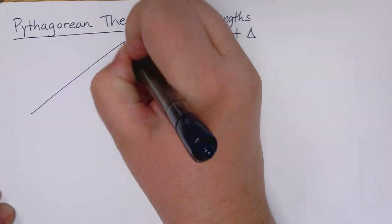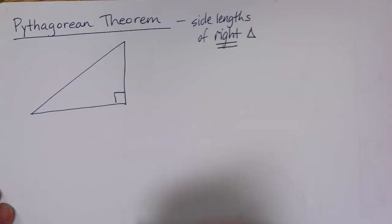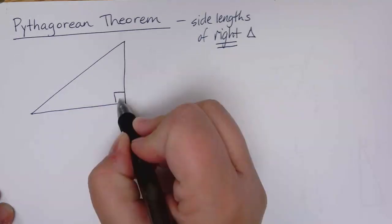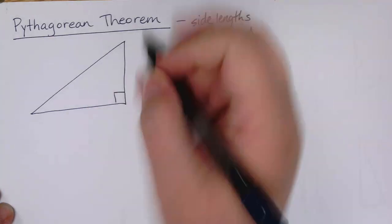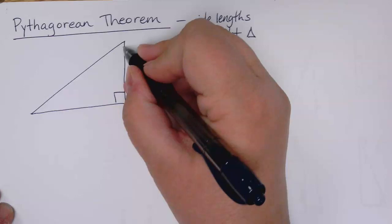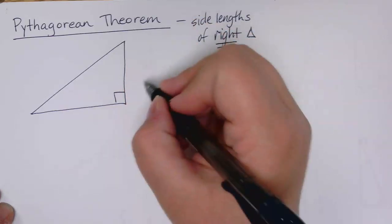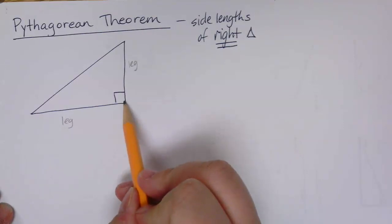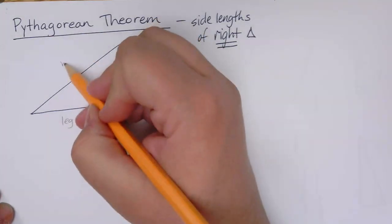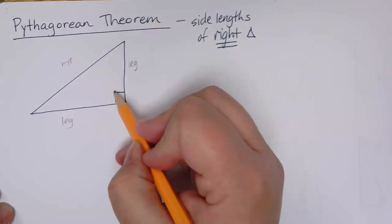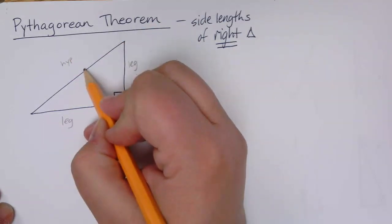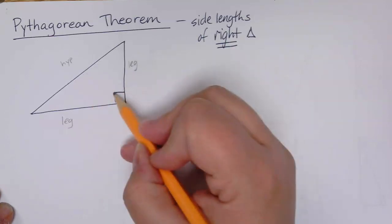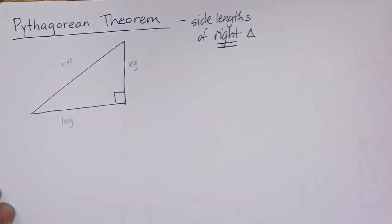Let me remind you that right triangles have names for their parts. The two side lengths that meet at the right angle, this is the right angle, the two side lengths that meet there are called legs. The side that does not meet at the right angle is the hypotenuse. Another way of thinking of it is it's the one that's across the triangle from the right angle, opposite the right angle.